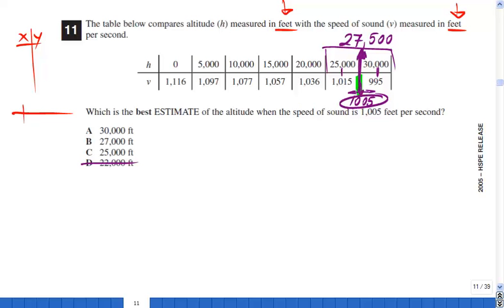So for 27,500, the best estimate for my speed of sound would be 1005, which tells me that the best answer here as an estimate will be 27,000. And this is how you solve a similar problem. Thank you.